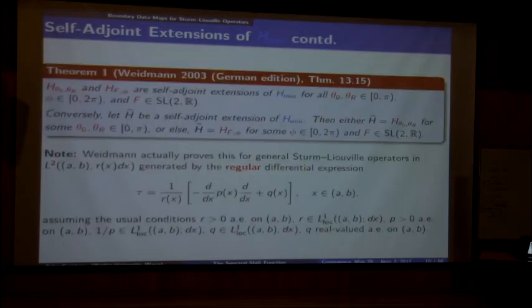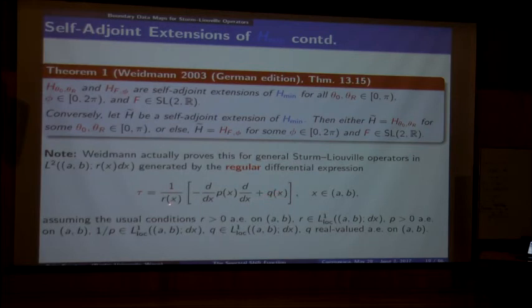Under these conditions you can do all this, and this exhausts all possible self-adjoint extensions. Unfortunately this book does not exist in English—it's part of a two-volume project. Like Weidmann's original 1980 book, it was written in German. Volume 1 covers abstract material and Volume 2 is totally devoted to ODEs and PDEs, with a lot more information there than in the English edition.